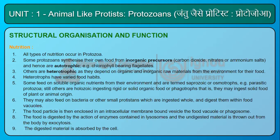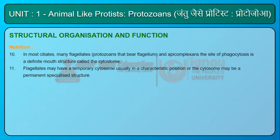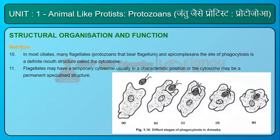The food particle is enclosed in an intracellular membrane-bound vesicle called the food vacuole or phagosome. Food is digested by the action of enzymes contained in lysosomes, and undigested material is expelled by exocytosis. In most ciliates, many flagellates, and apicomplexans, the site of phagocytosis is a definite mouth structure called the cytostome. Flagellates may have a temporary cytostome in a characteristic position, or the cytostome may be a permanent specialized structure.